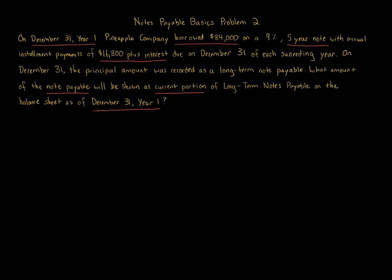The question is asking for the current portion. Think of a balance sheet — assets equals liabilities plus owner's equity. On the left side we have all the assets; on the right side we have liabilities and owner's equity. Under the liabilities portion we're going to have notes payable, and we need to break it up into the current portion and the long-term portion.